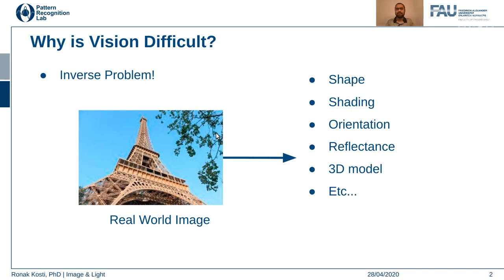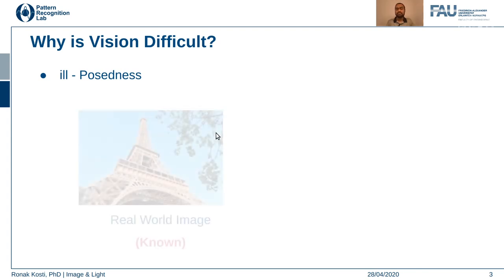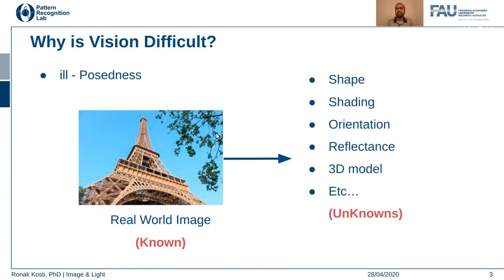Another problem is that most problems in computer vision are ill-posed. What I mean by ill-posed problems is that there are insufficient examples to match the unknowns present in the problem. Looking at a real-world image, this is a known entity from which we have to infer many different aspects — these are the unknowns — and there are a lot more unknowns. This is a rough approximation of the ill-posedness of computer vision problems.